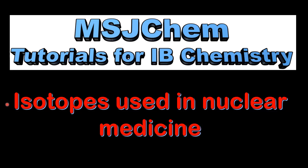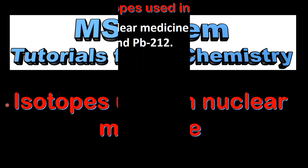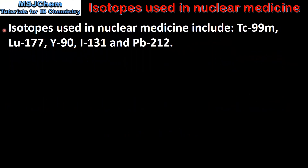This is MSJChem. In this video I'll be looking at isotopes used in nuclear medicine. Isotopes used in nuclear medicine include technetium-99m, lutetium-177, yttrium-90, iodine-131 and lead-212.